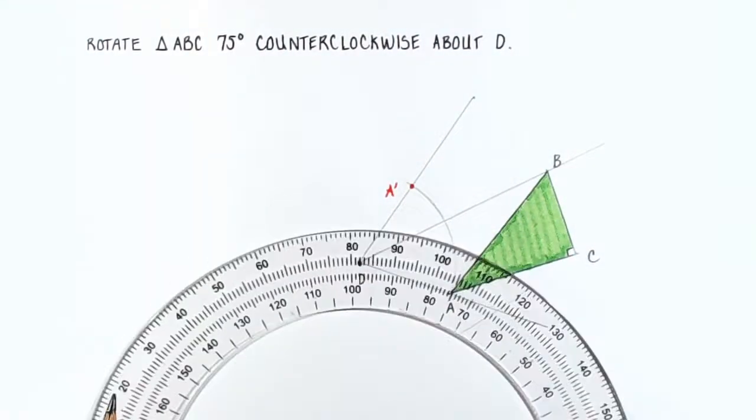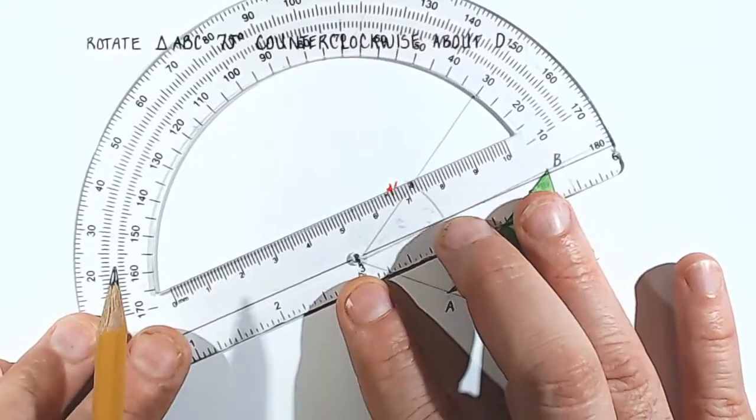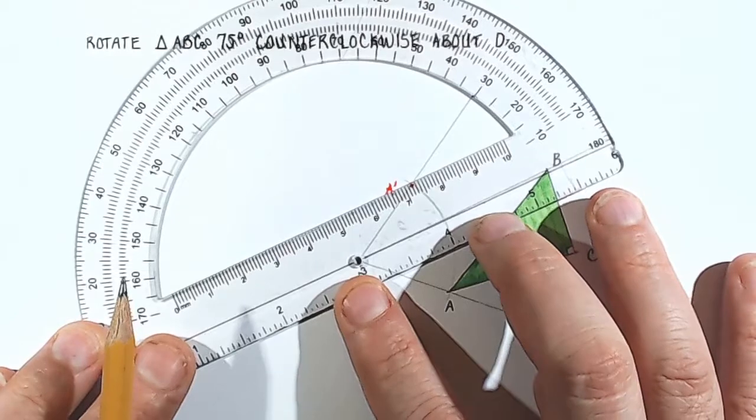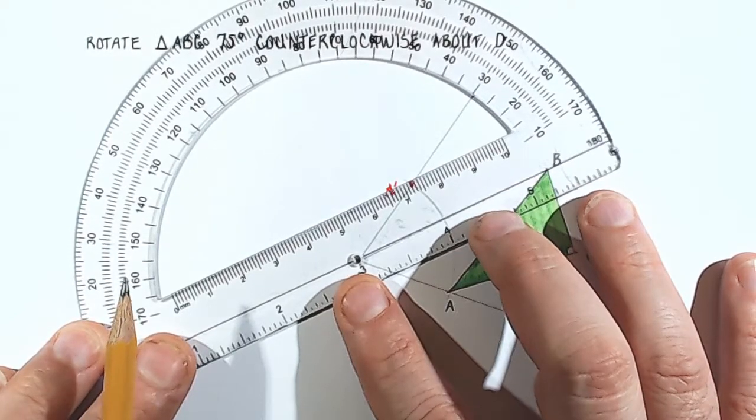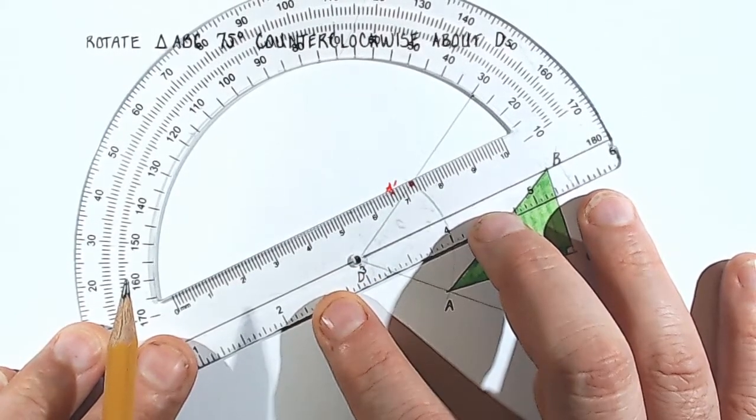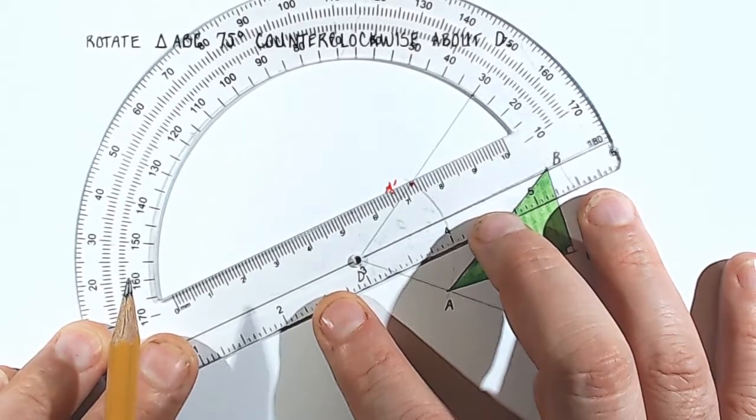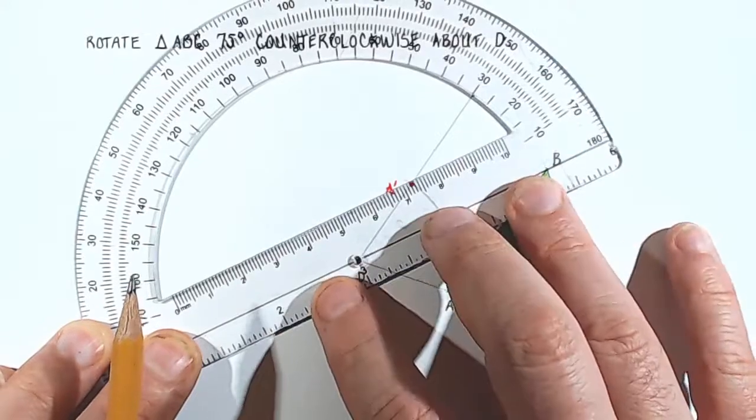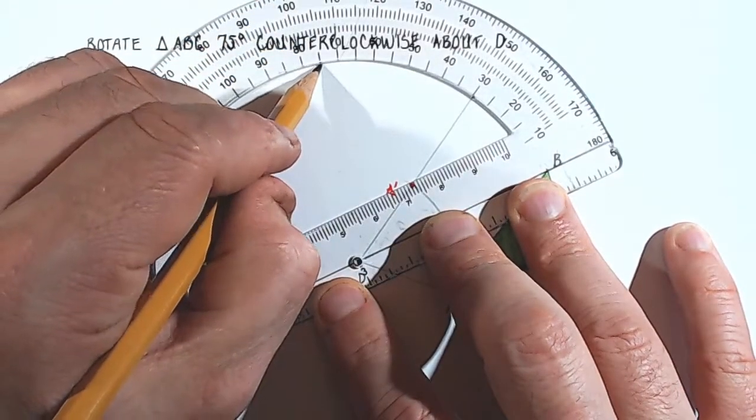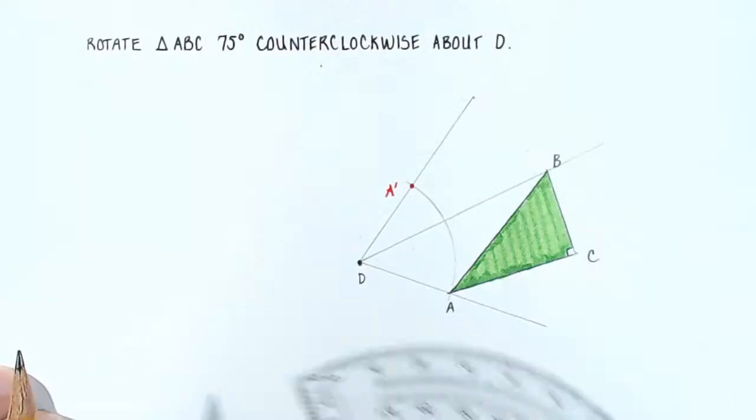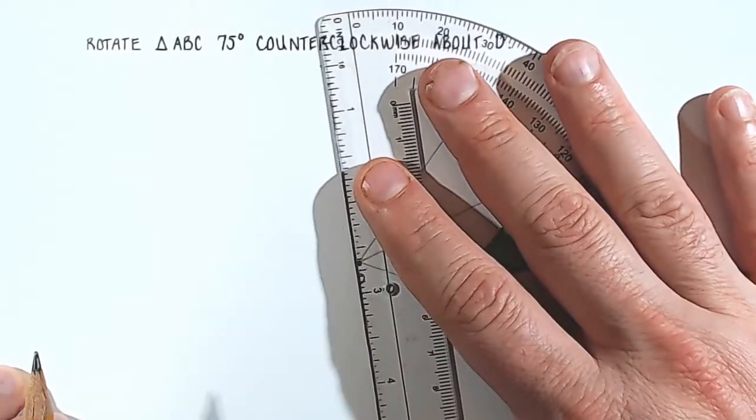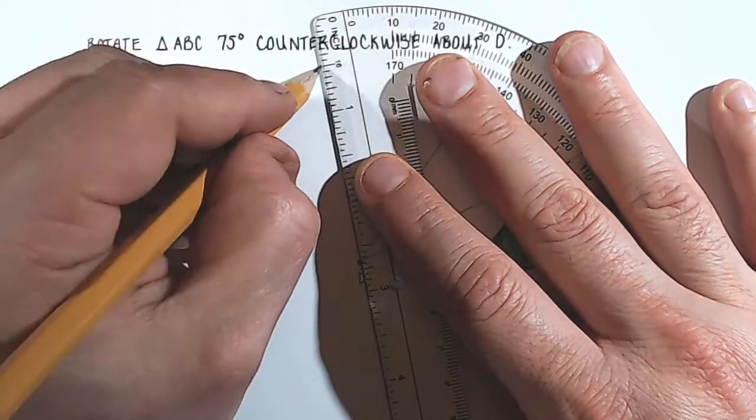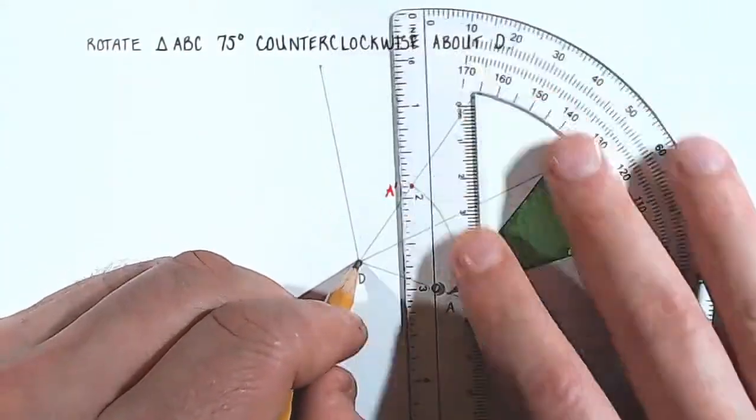And we are once again going to measure off 75 degrees by centering the point, the circle of our protractor above that point D. And we're going to be very careful to line up that segment we just drew with our guide mark right here. And now I'm going to find 75 degrees again, put a dot right there, and connect D to that dot.